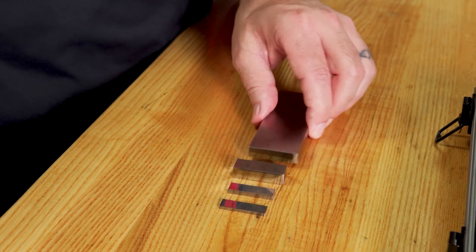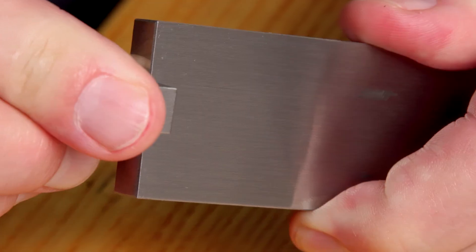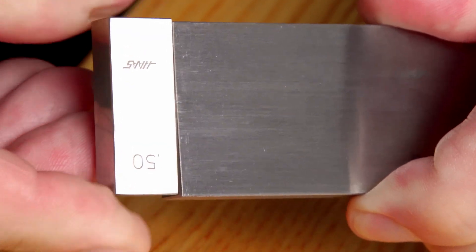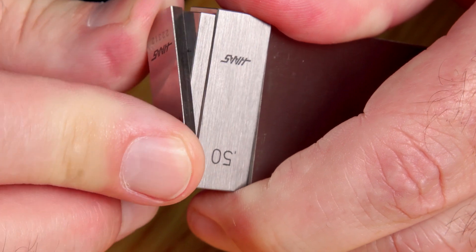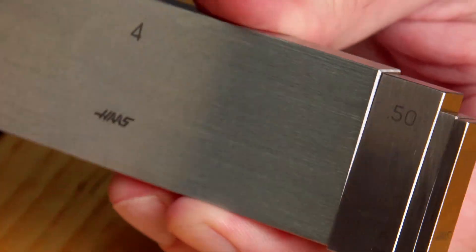Now, we don't just stack our blocks together, we actually ring them together like wringing our hands. This creates a strong bond that holds them firmly in place. Now, this is an amazing property of physics that is worth looking up sometime.